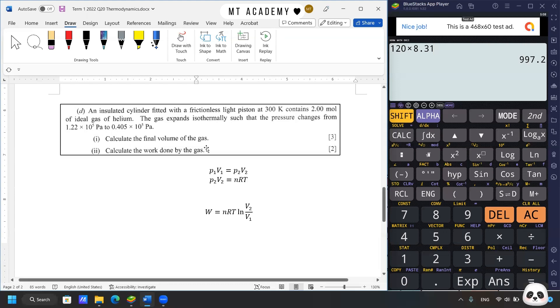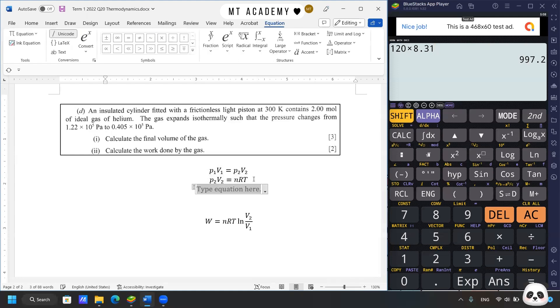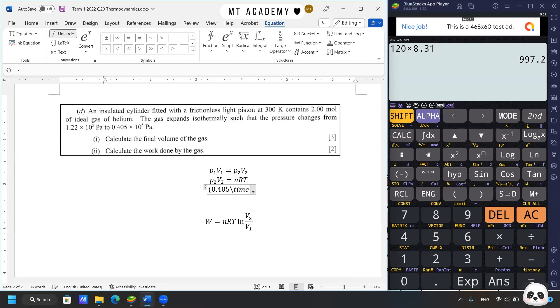Calculate the final volume of gas. We have the equation P₁V₁ equals P₂V₂ for isothermal process, but the information is not enough. However, we have the final pressure, number of moles, and temperature, so we can apply the ideal gas equation. The final pressure is 0.405 times 10⁵ Pascal. We need to find the final volume, equal to 2 moles multiplied by the gas constant multiplied by the temperature. The final volume is 1.23 times 10⁻¹ meter cubed.